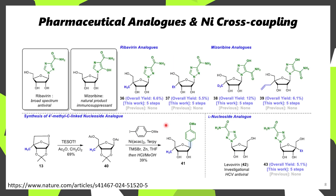Exploring the utility of this methodology further, they were able to prepare some analogs of ribavirin, myzoribine, as well as this L-nucleoside analog, levavirin. This would just be done using the corresponding enantiomer of proline. Another cool thing they showed is that if you take this acetate-containing furanose, it's possible to couple this with nickel-mediated cross-coupling using a vinyl iodide to afford product 41 — so you're not just limited to nitrogen-containing heterocycles; you can apply this to carbon-carbon bond forming reactions also.